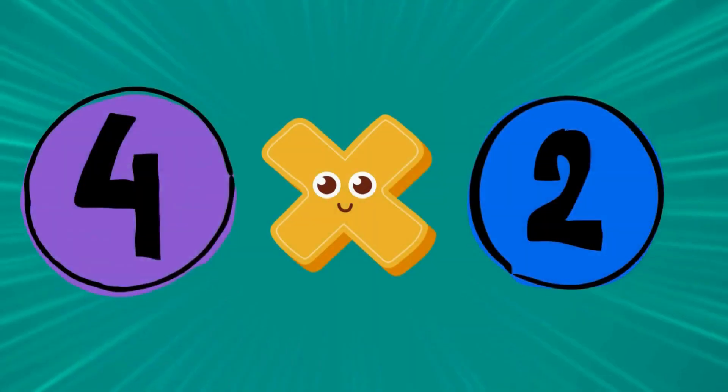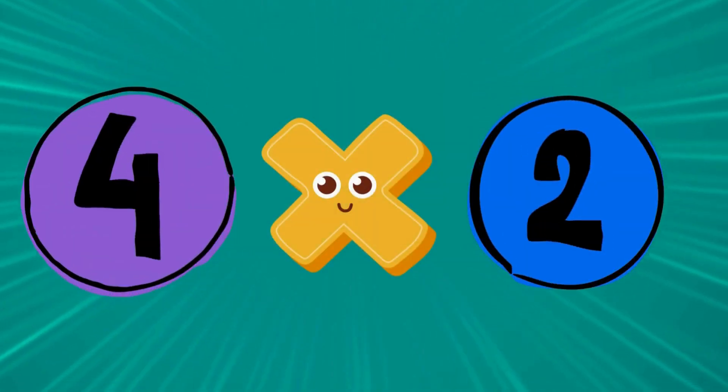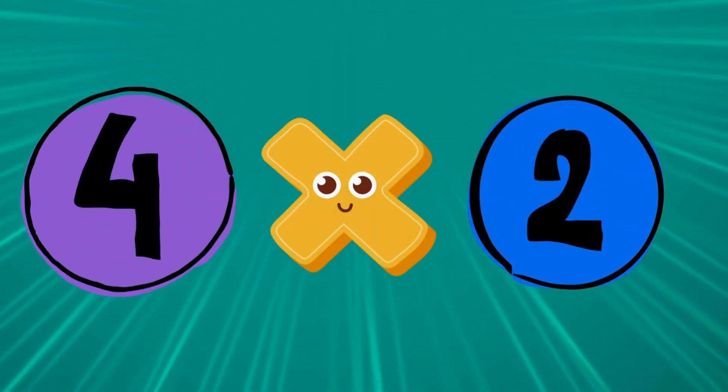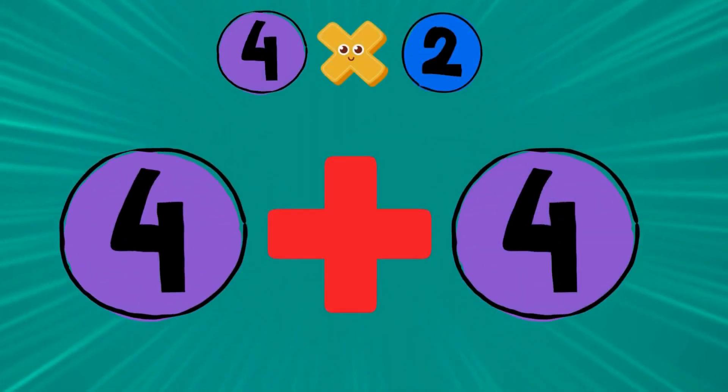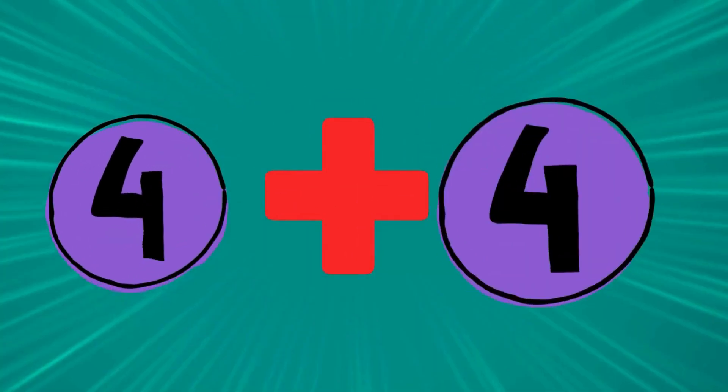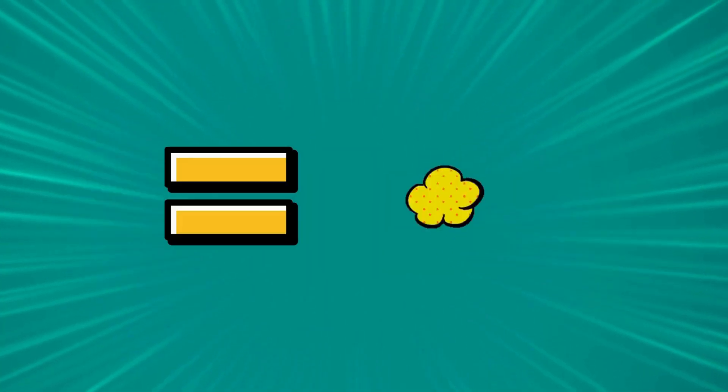Multiplication is just like adding the same number again and again. When we say four times two, it means we are adding four two times: four plus four equals eight.